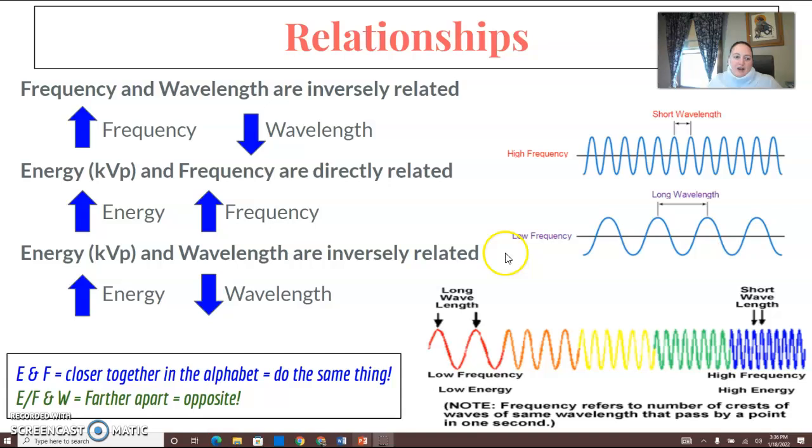A trick a student taught me in the past was that E and F, so energy and frequency, the letters E and F are close together in the alphabet. They do the same thing. E and F and then W are farther apart, so they work opposite of each other. E and F play on the same team and they're friends and they're a little mean to W. They go in opposite directions if that helps you at all.